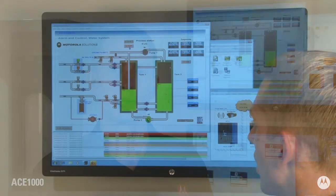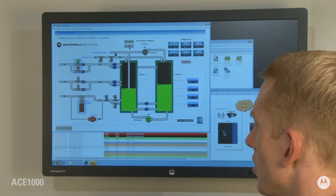The ACE1000 utilizes the data capabilities of a mobile radio network to send and receive data between the control centre and equipment in the field.